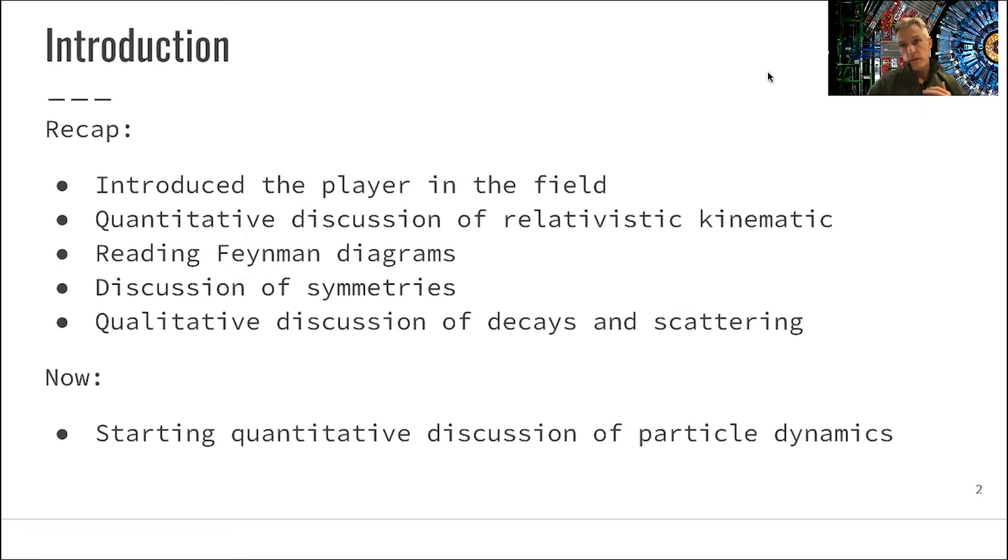We do this now in the next video by introducing Fermi's golden rule. And then we study a toy theory, which is simplified such that the algebra involved is not too much of a hassle. So we can focus on understanding or following Feynman rules in order to calculate decay rates and scattering cross-sections.